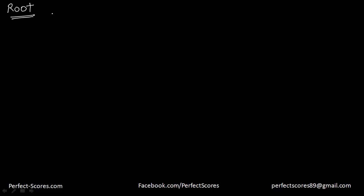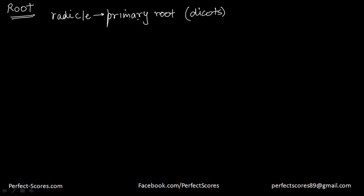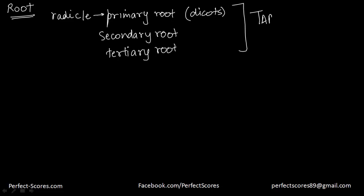In a majority of dicotyledonous plants, you have a direct elongation of the radicle that leads to formation of the primary root. This is true for most dicots, and this grows inside the soil. It also bears lots of lateral roots of several orders — those are called secondary roots, and then further roots known as tertiary roots. The primary root and its branches constitute a system that we call the tap root system.